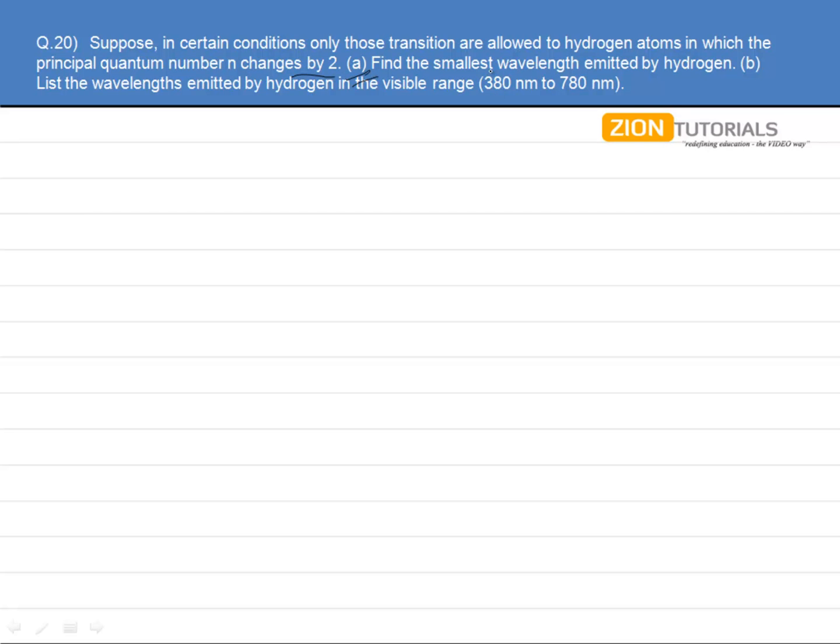Then find the smallest wavelength emitted by hydrogen and list the wavelengths emitted by hydrogen in the visible range.